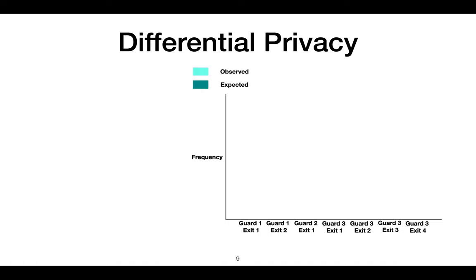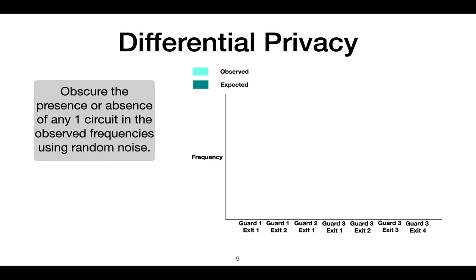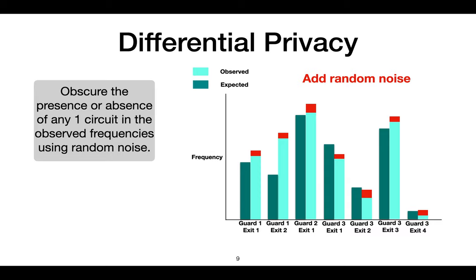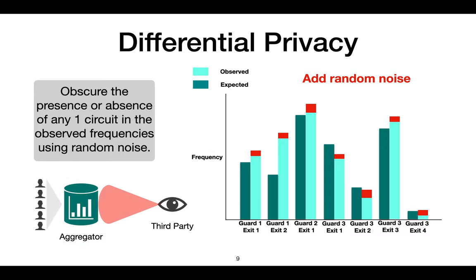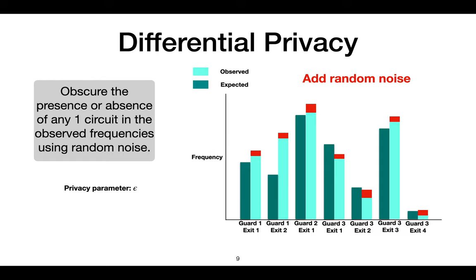In order to preserve user privacy, we will obtain the observed frequencies while satisfying differential privacy. Differential privacy ensures that the presence or absence of any one circuit is obscured in the aggregate result. This is achieved by adding random noise to the observed frequencies. A third party or aggregator who views the aggregate frequencies cannot infer the presence or absence of any specific circuit. The level of privacy provided is defined by a parameter epsilon. Roughly, differential privacy ensures that the probability of obtaining the reported frequency f, given that a circuit i was not included in the database, is within a multiplicative factor of e^ε of the probability of obtaining that same frequency if circuit i was included. A smaller value of epsilon provides a stronger privacy guarantee.